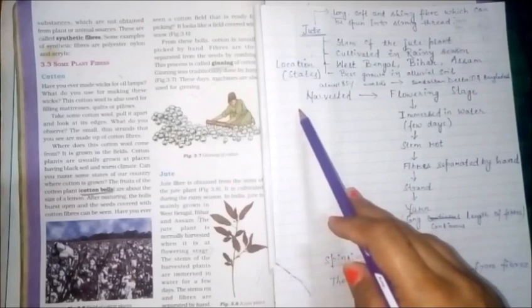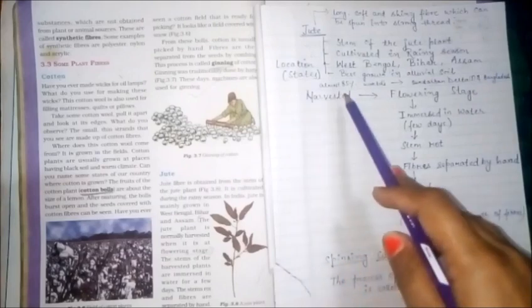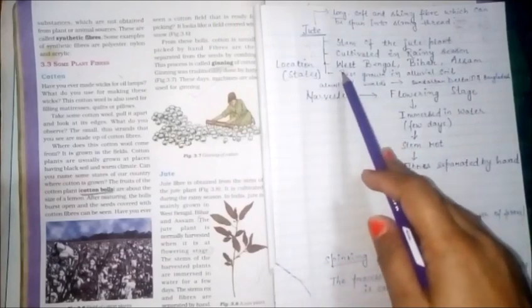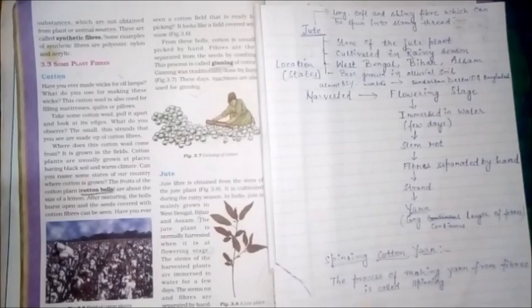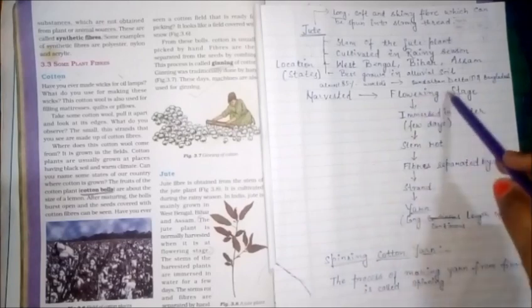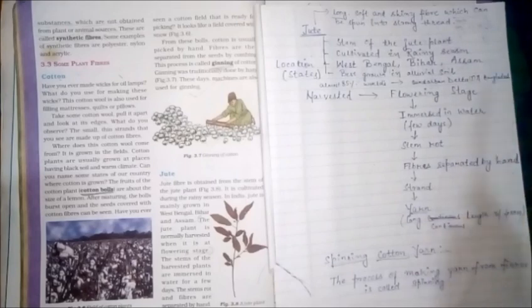The locations or states where jute fiber is grown are West Bengal, Bihar, and Assam. They are best grown in alluvial soil. And almost 85% of world jute cultivation is done in Sundarban Delta of India and in Bangladesh.